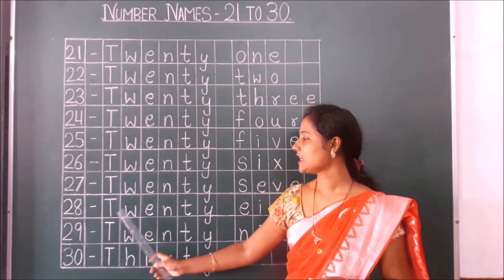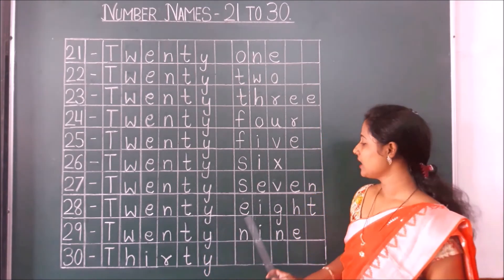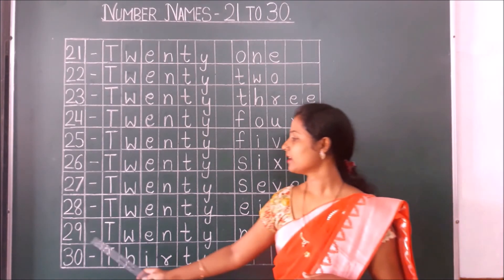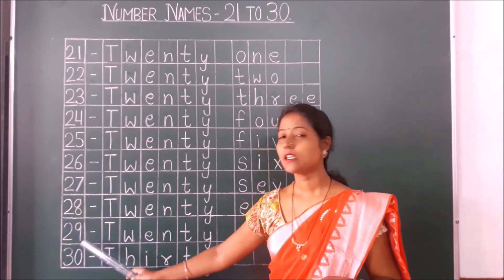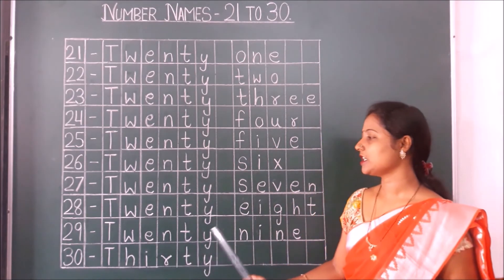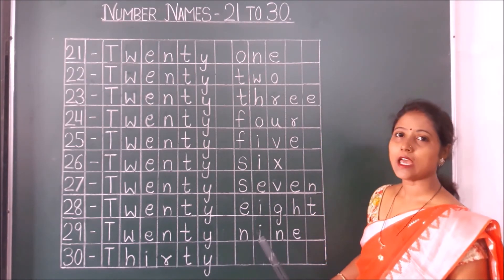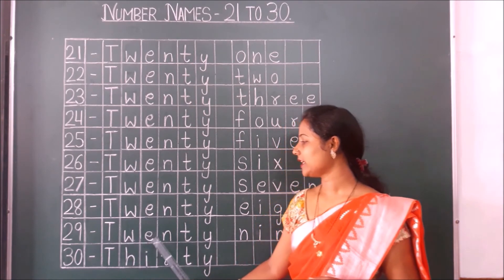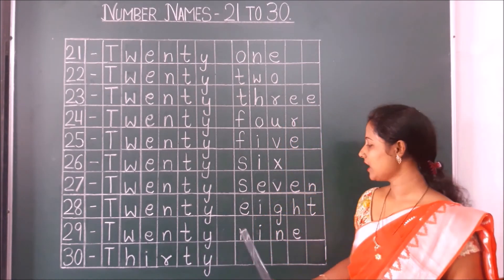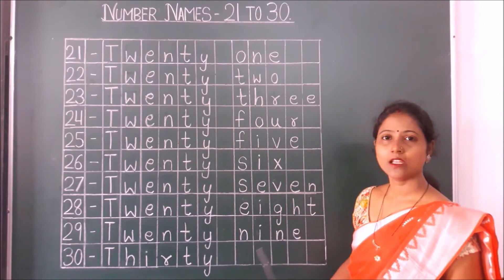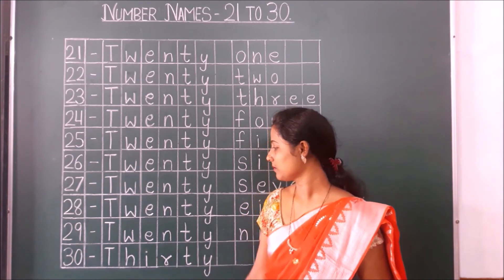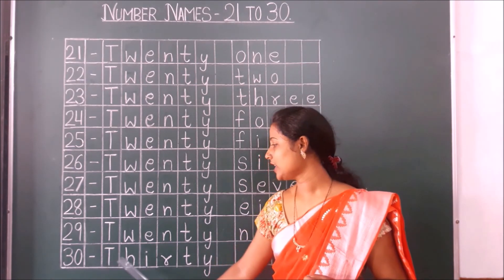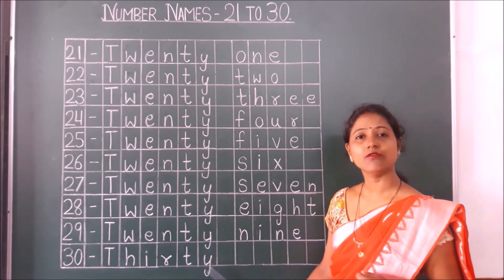Let's repeat: T-W-E-N-T-Y E-I-G-H-T, 28. After 28, 29: T-W-E-N-T-Y N-I-N-E, 29. 30: T-H-I-R-T-Y, 30. Let's repeat once again, children: T-H-I-R-T-Y, 30.